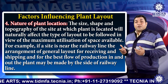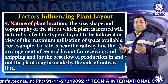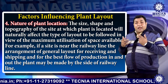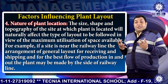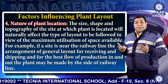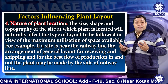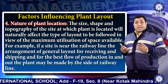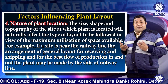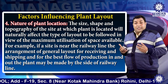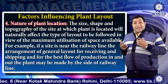The fourth factor is the nature of plant location. The size, shape, and topography of the site at which the plant is located will naturally affect the different types of layout. For example, if a site is near a railway line, the arrangement of the general layout for receiving and shipping, for the best flow of production in and out, the plant may be made by the side of the railway line.